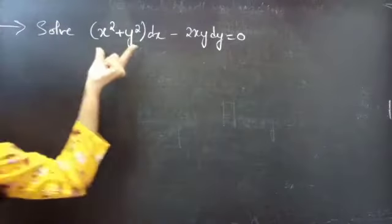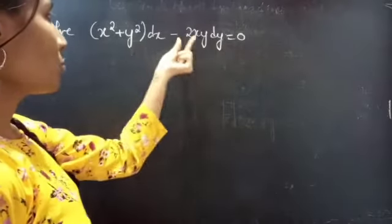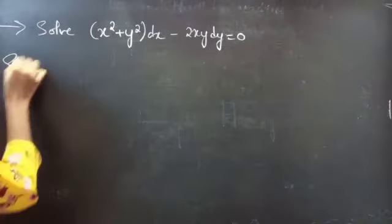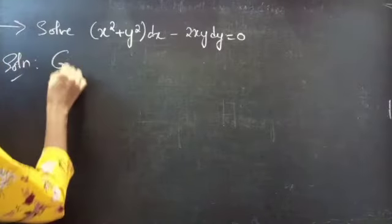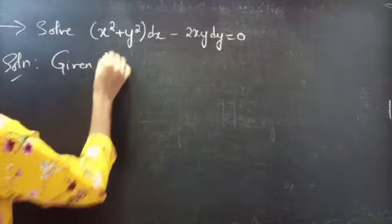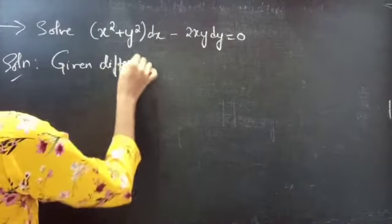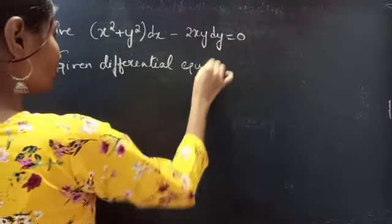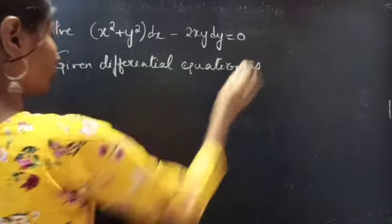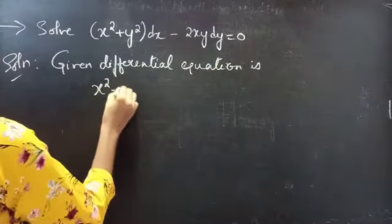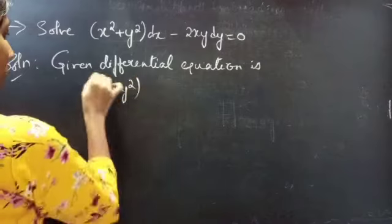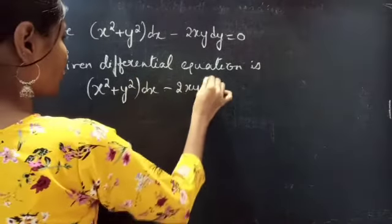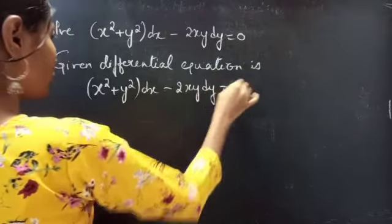Problem. Solve: x squared plus y squared into dx minus 2xy into dy equals to 0. The given differential equation is x squared plus y squared into dx minus 2xy into dy equals to 0.